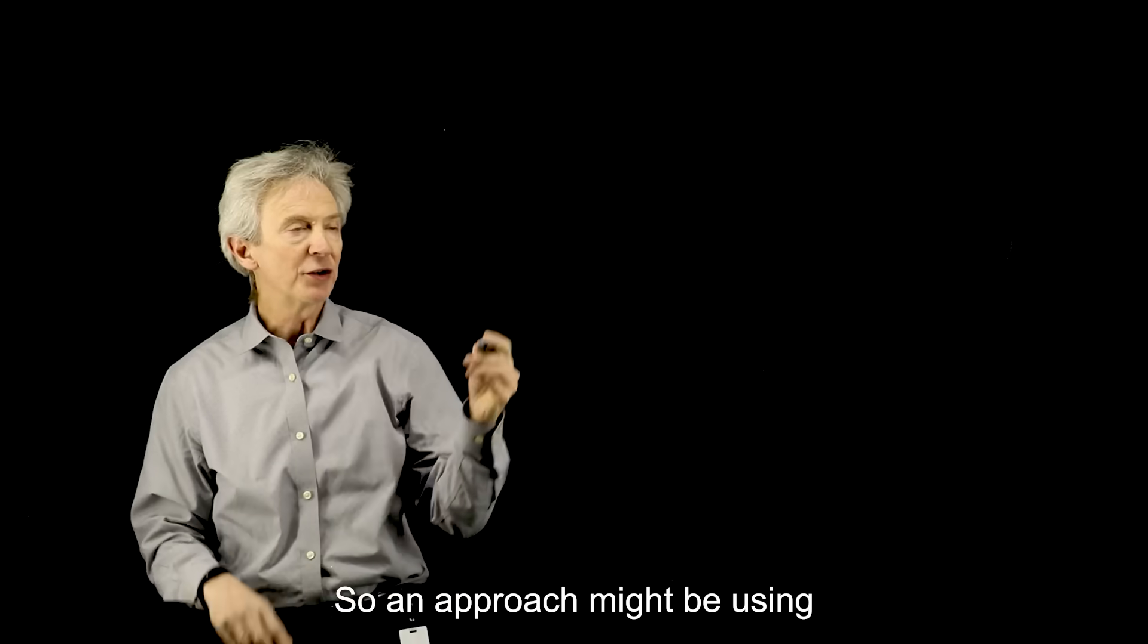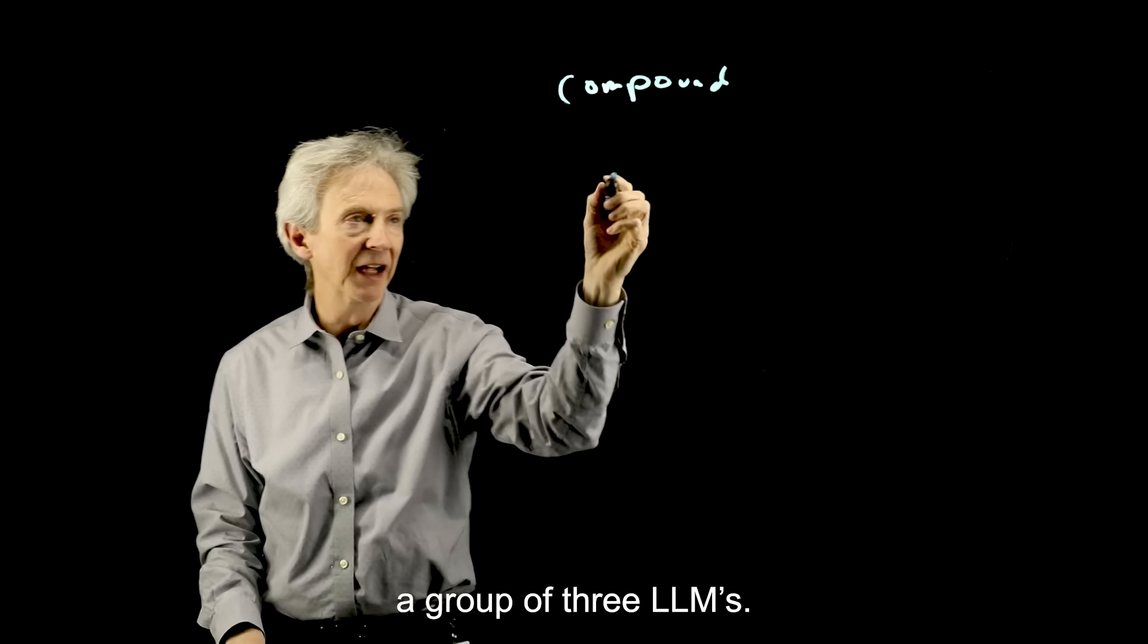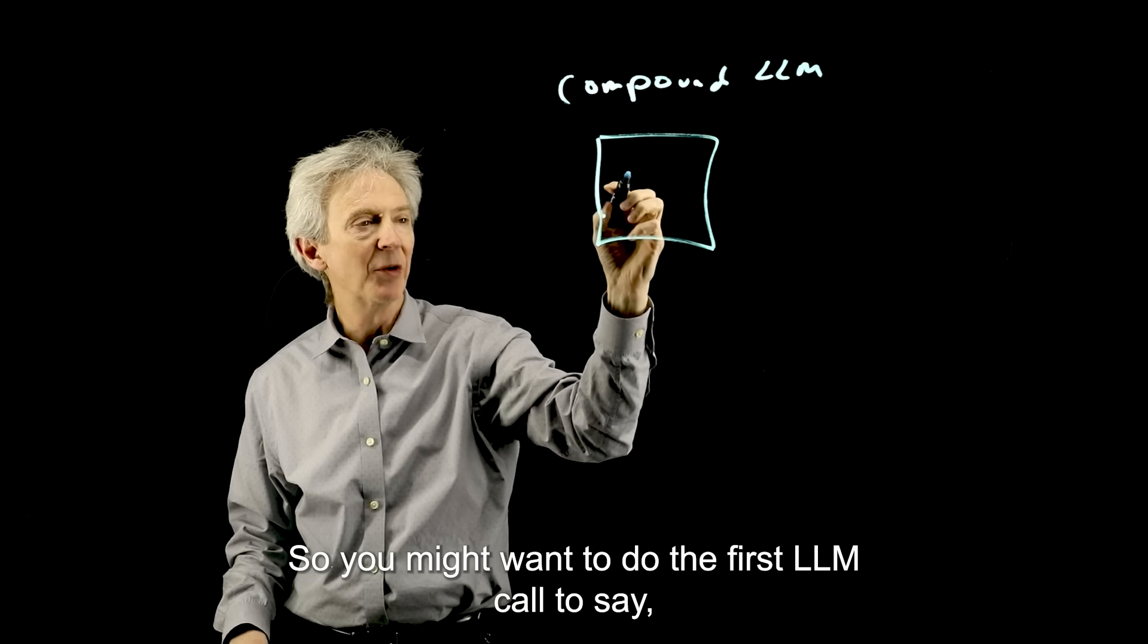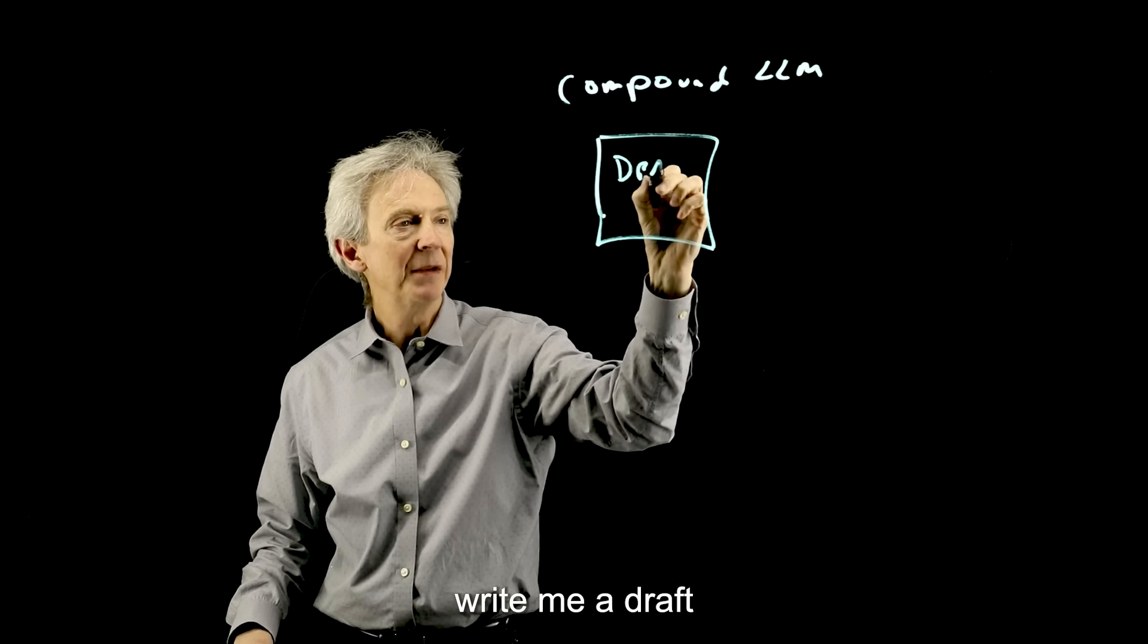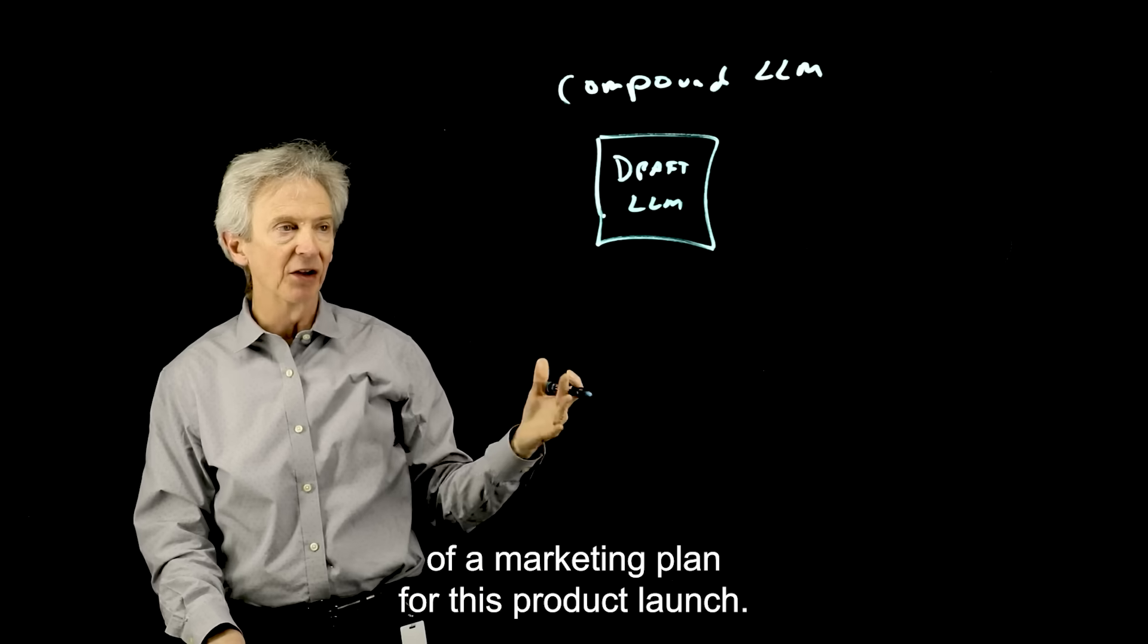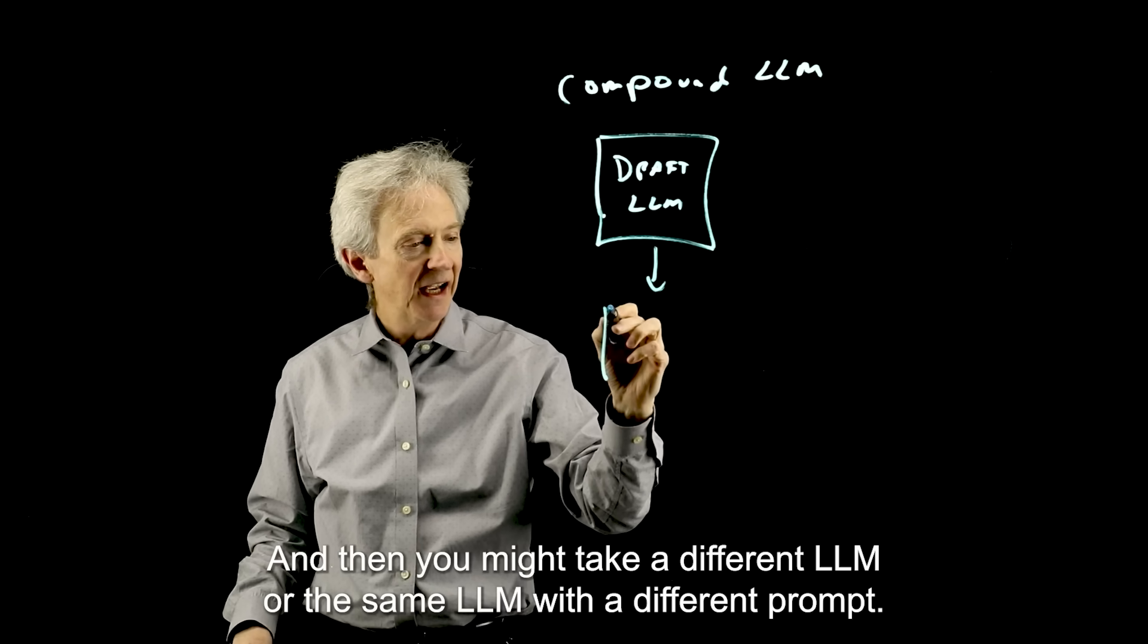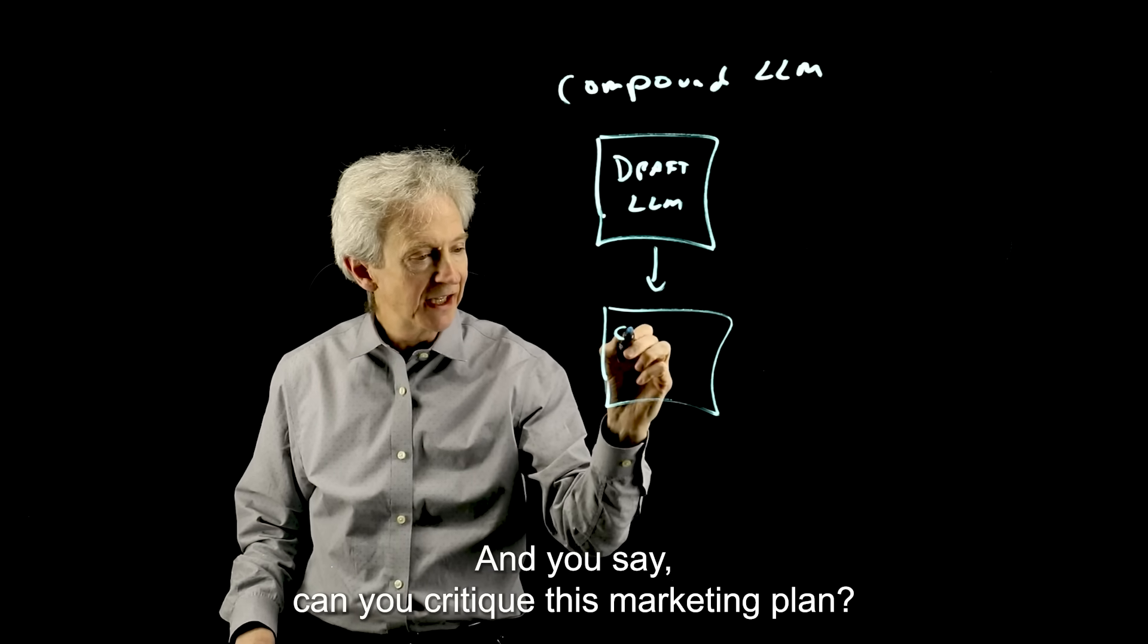So an approach might be using a group of three LLMs, and I'm calling it a compound LLM. So you might want to do the first LLM call to say, write me a draft of a marketing plan for this product launch. And you pack it with the prompt, like I said, and that gives a response.